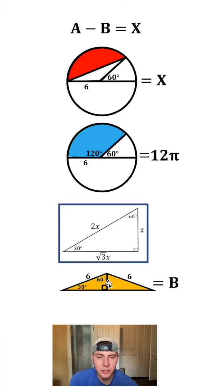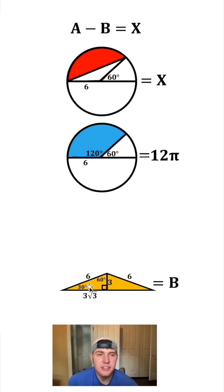The side opposite the 30 degrees is always half the hypotenuse. So this hypotenuse is 6, so this side right here is going to be 3. And then the side opposite the 60 is always square root of 3 times the smallest side. So this right here is going to be 3 root 3. Since these two are similar triangles, this is also 3 root 3. And when we combine them, we get 6 root 3.